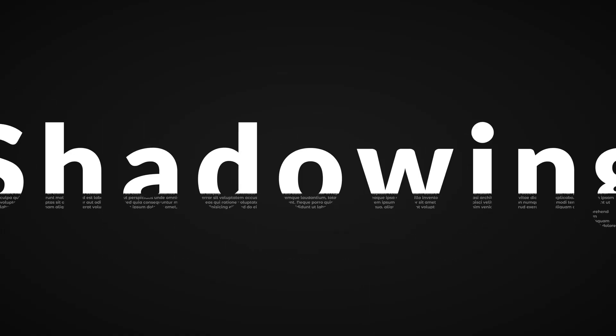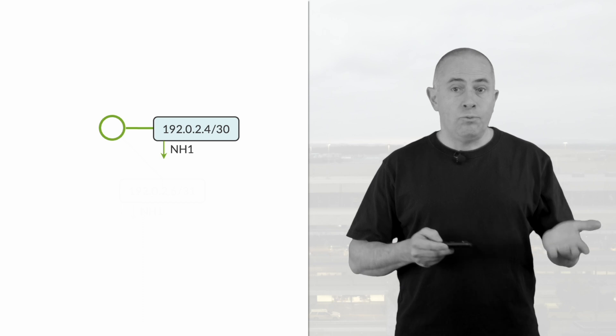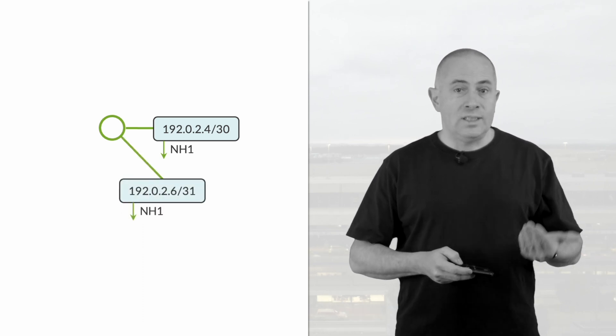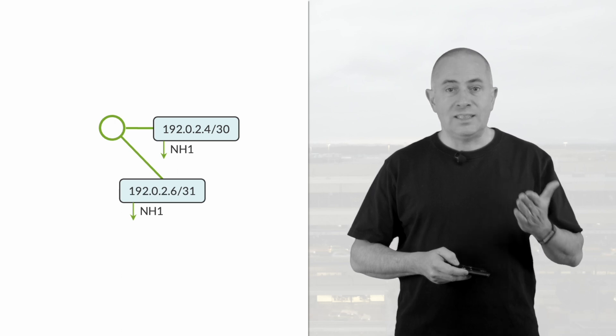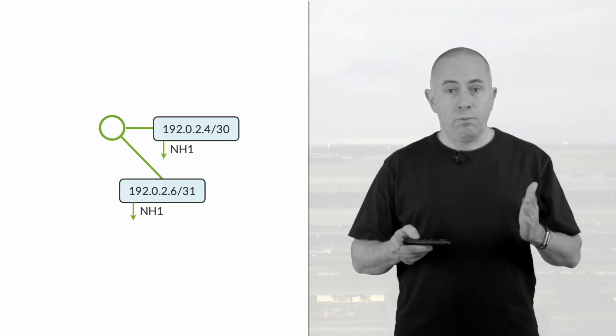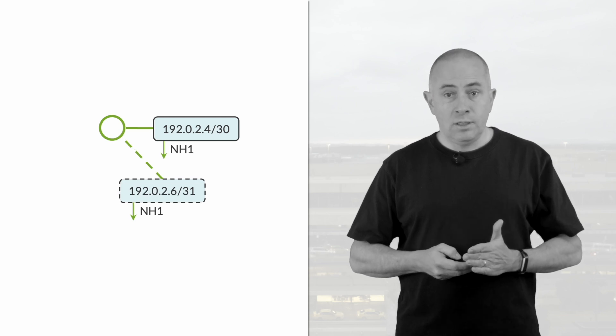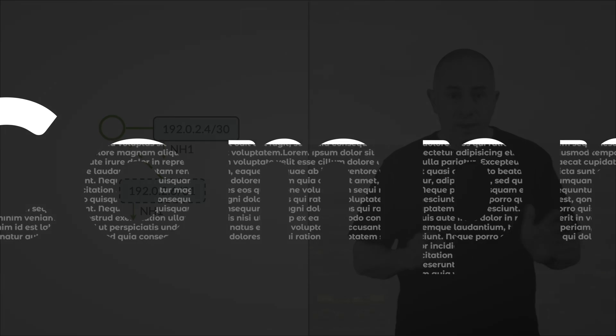The key concepts behind FIB compression are very basic. The first rule is the shadowing principle. If I receive a route with a forwarding behavior similar to an existing superset, it doesn't bring any useful information — I don't program it. For example, if I receive two routes 192.0.2.4/30 and 192.0.2.6/31, both pointing to NH1, I don't need to program the /31. It will occupy space for nothing.